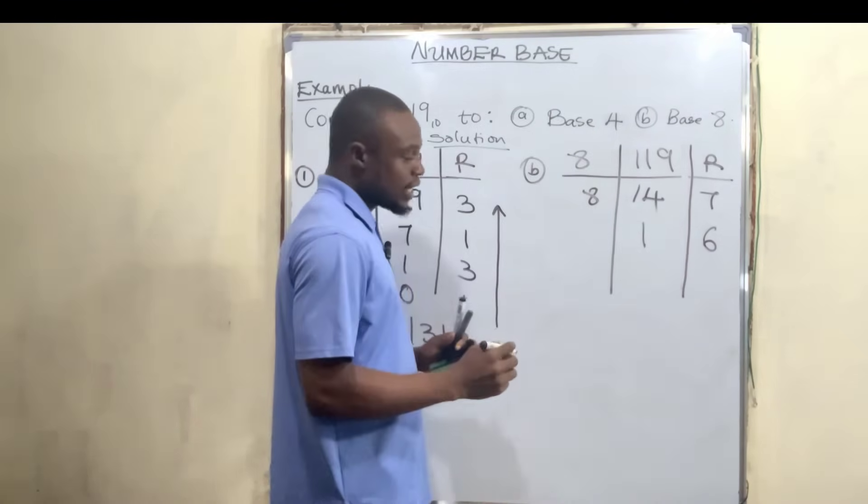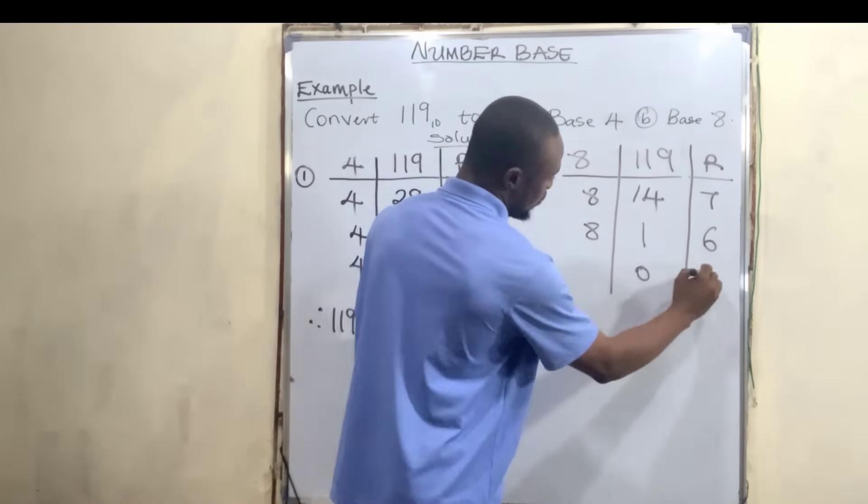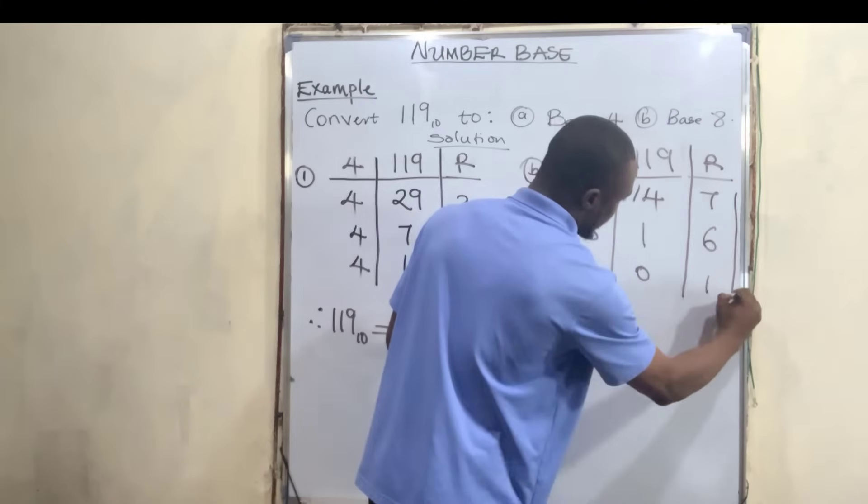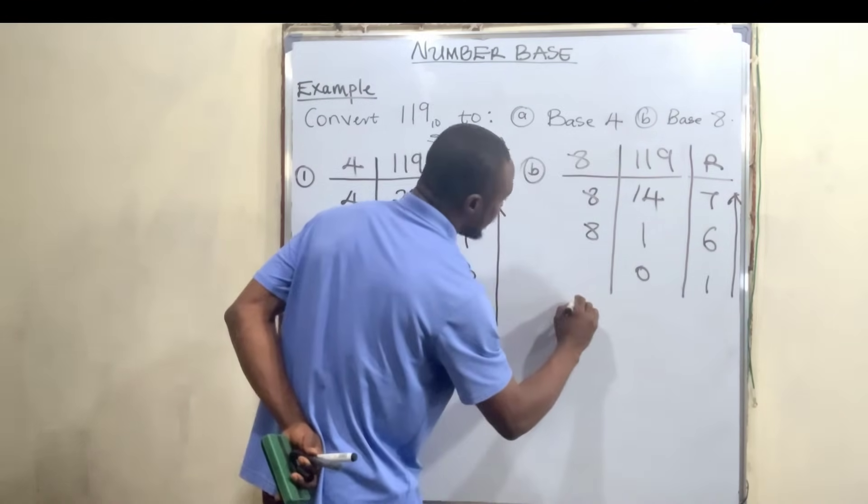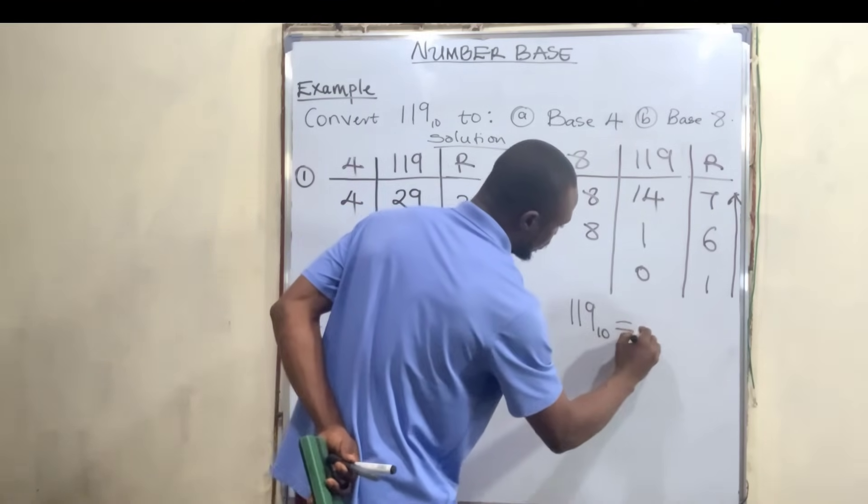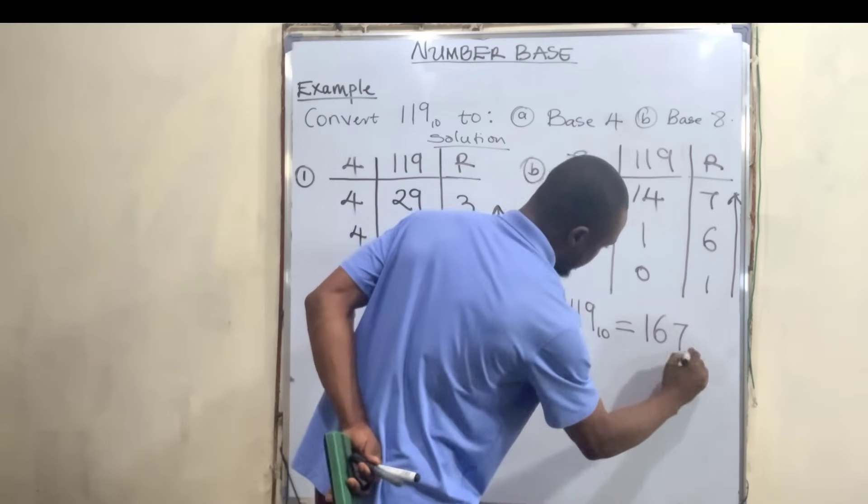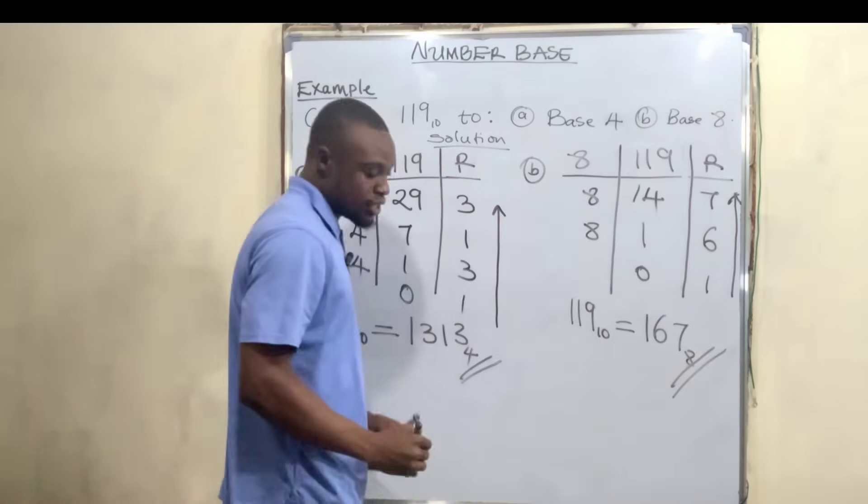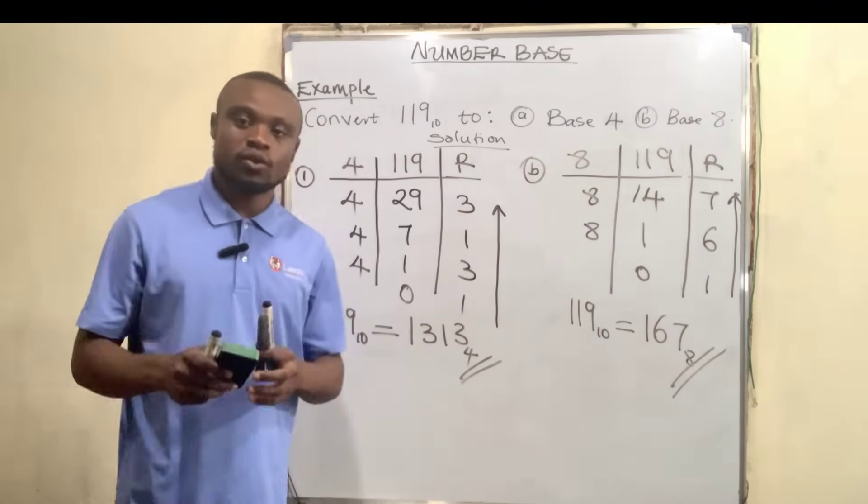1 divided by 8 gives us 0 remainder 1. If we pick these numbers from the bottom to the top, we have 119 base 10 equal to 167 base 8. This is finally the answer. Thank you guys for watching, see you in the next video.